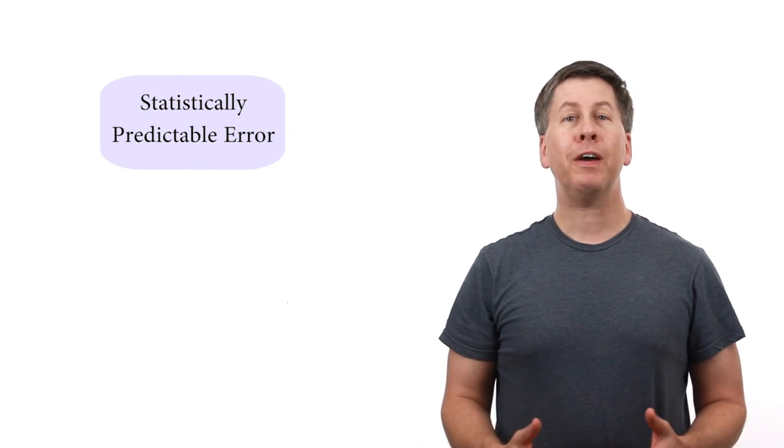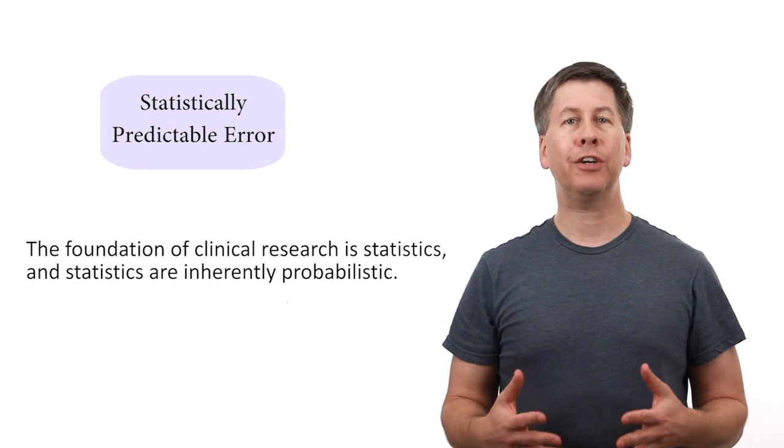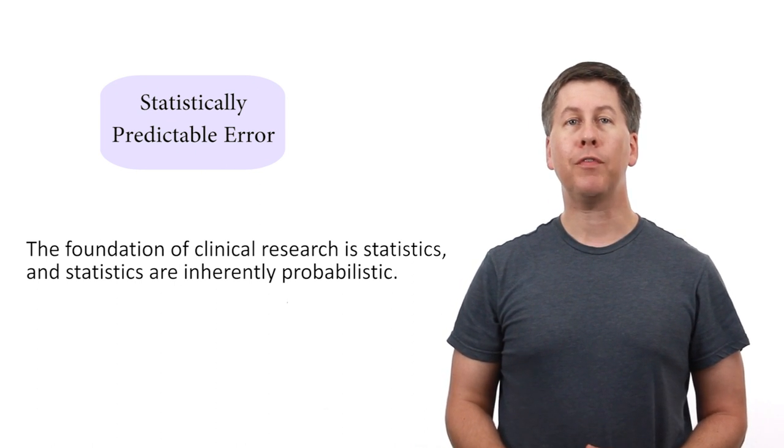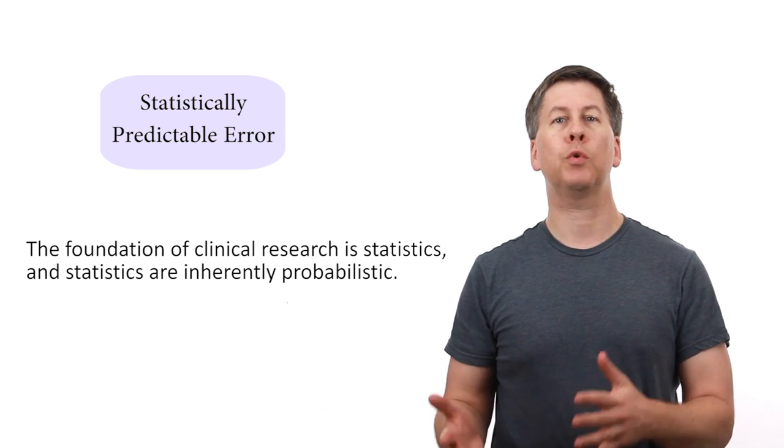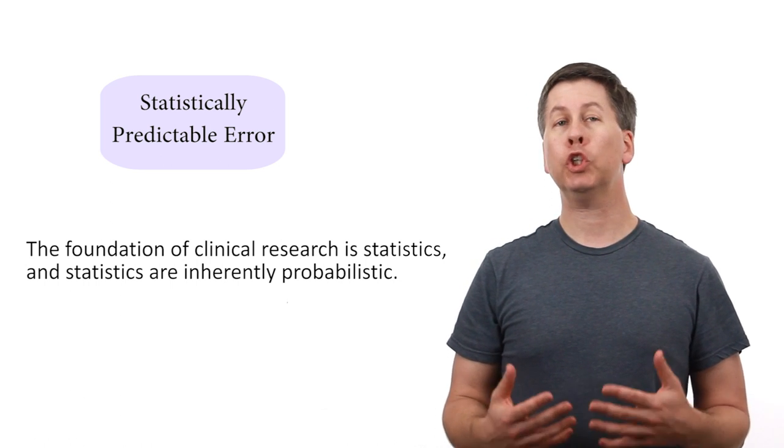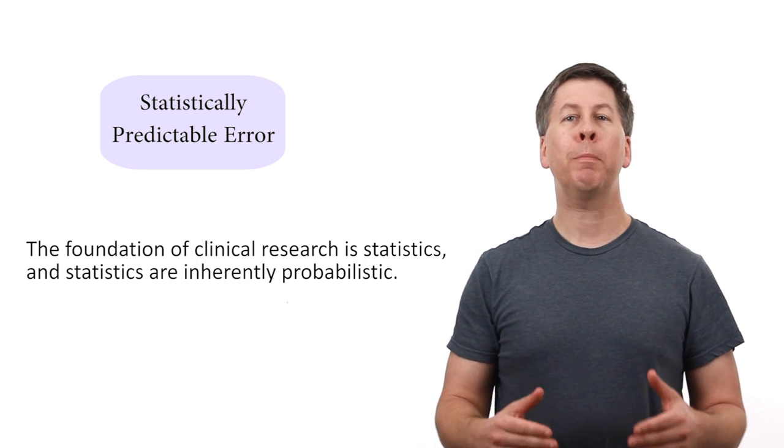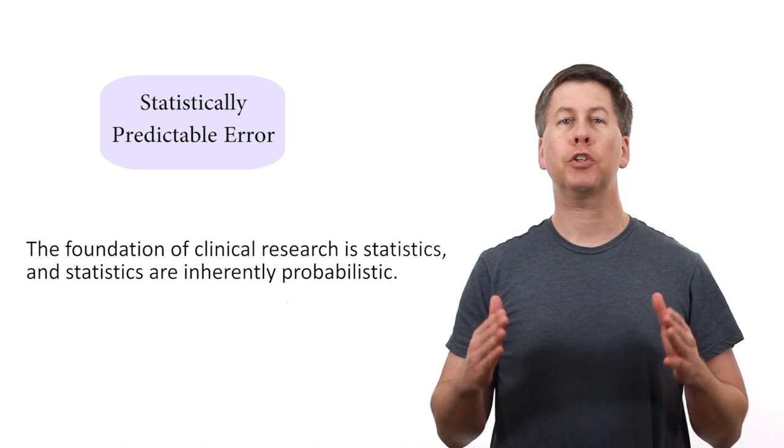The third major contributor to false published results is often called random error, but I think this is a misleading term for it. I prefer statistically predictable error. The foundation of clinical research is statistics, and statistics are inherently probabilistic. If we are studying the effect of a certain drug on a disease, we can never say the drug definitely does or does not have a positive impact. The most we can, or at least should ever say, is the probability that the drug has an impact, or the probability that its effect is within a certain range.